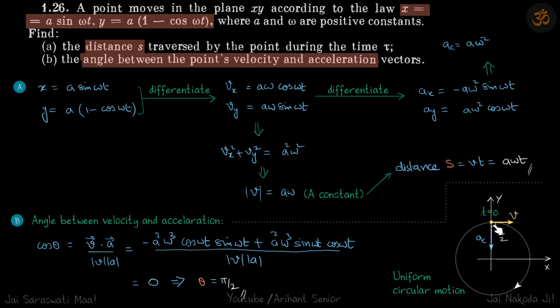Obviously its trajectory is a circle, which wasn't asked. But if you want, you can eliminate omega t from both equations by squaring both x and y, and you will get the equation of a circle.